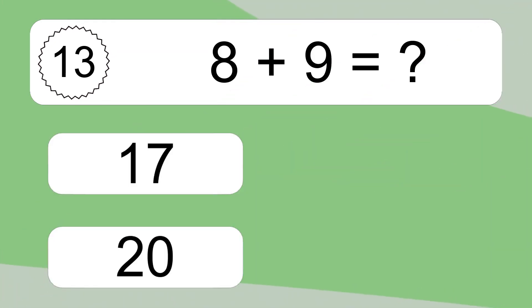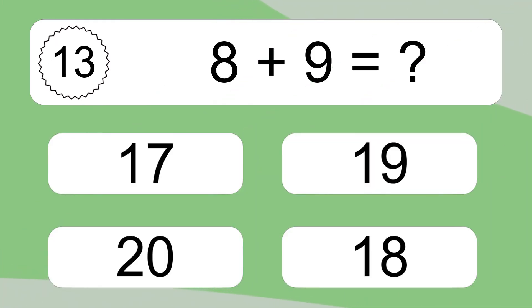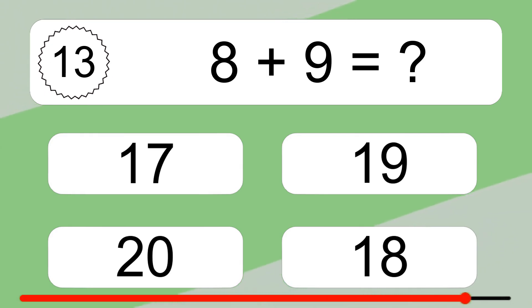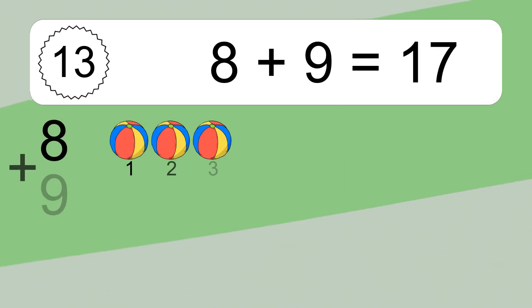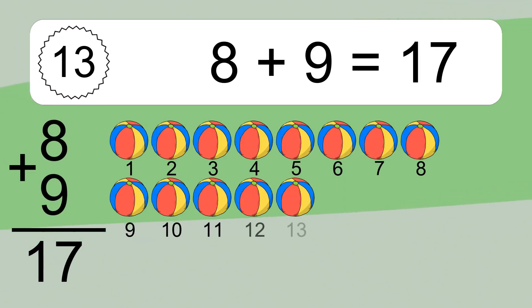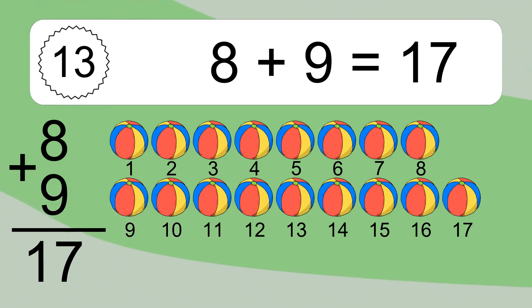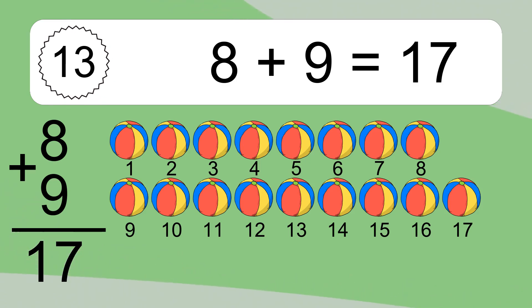8 plus 9 equals what? 8 plus 9 equals 17. Let's count it. 1, 2, 3, 4, 5, 6, 7, 8, 9, 10, 11, 12, 13, 14, 15, 16, 17.